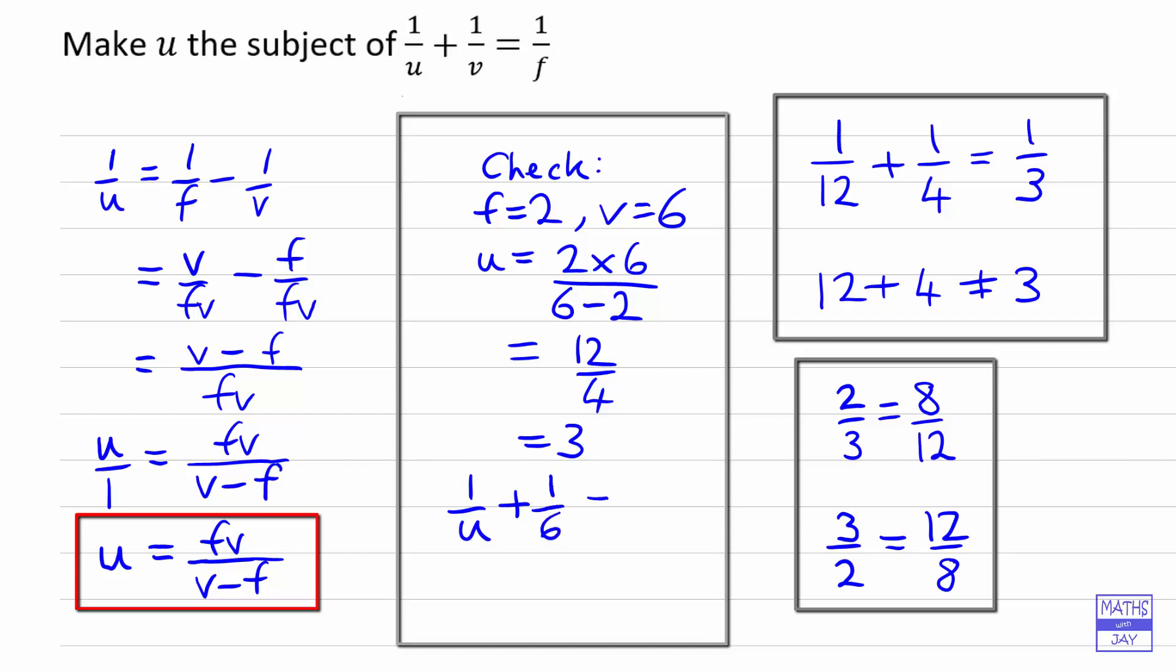so that's one over six, is equal to one over F, so that's one over two. So now I can say one over U is a half minus a sixth,